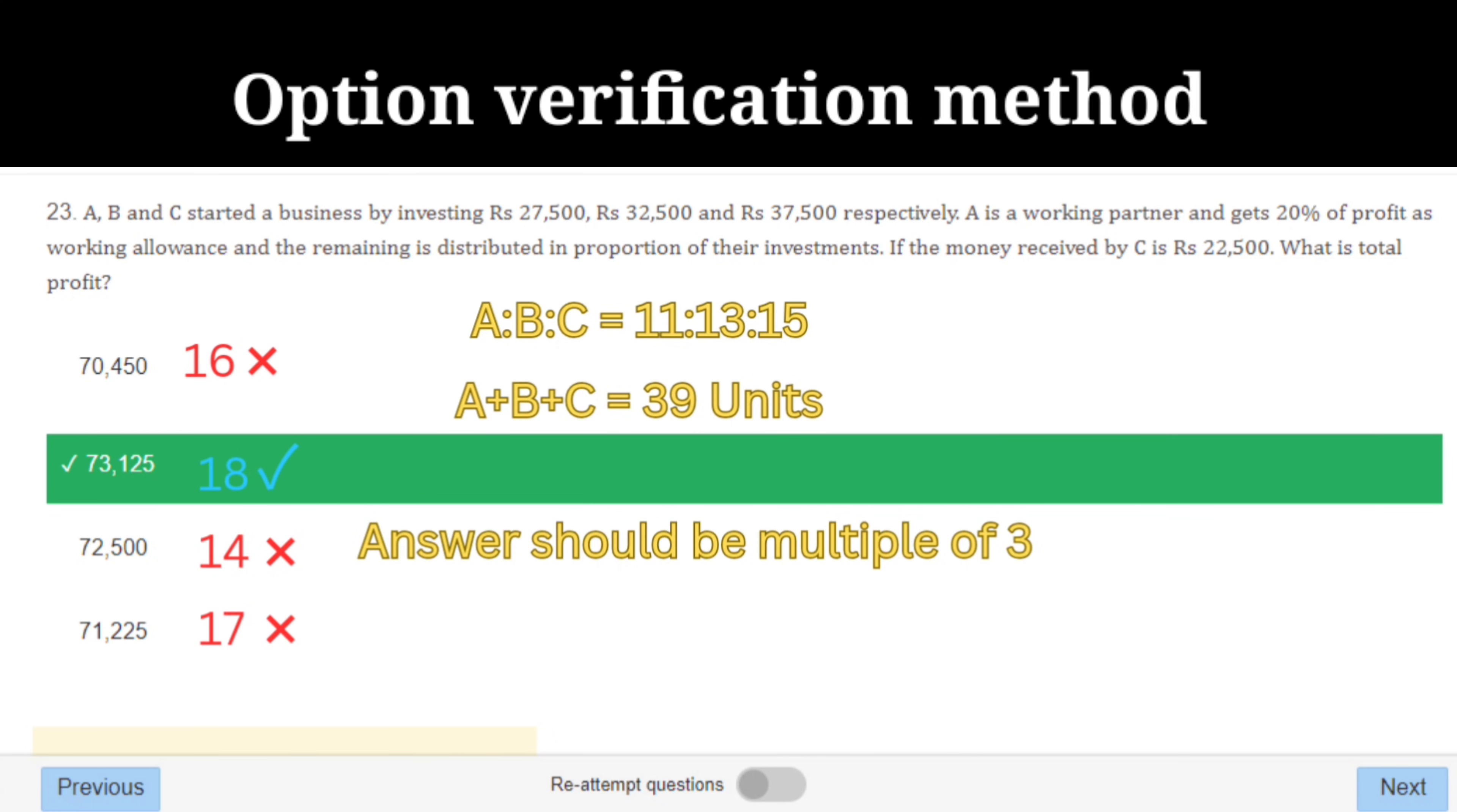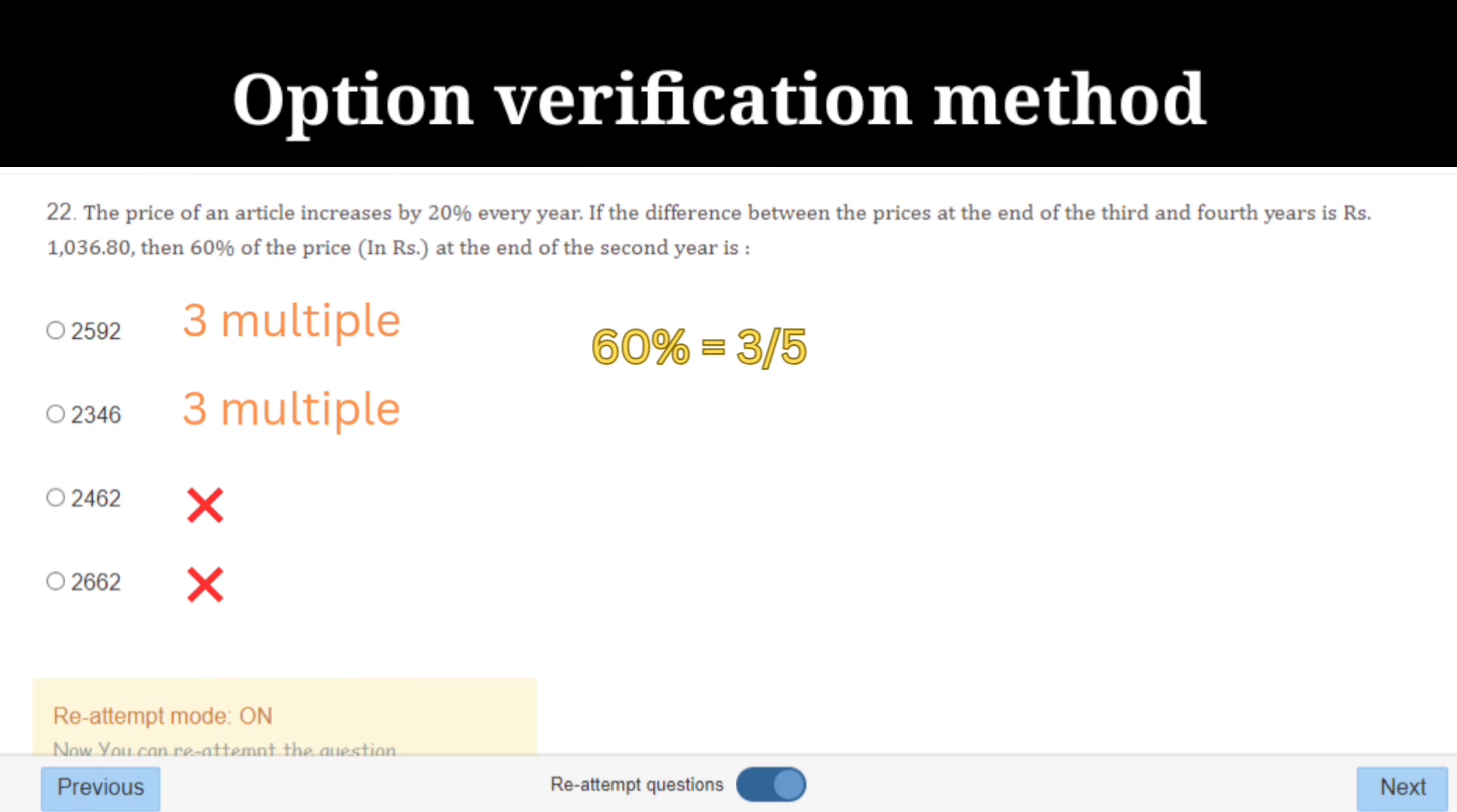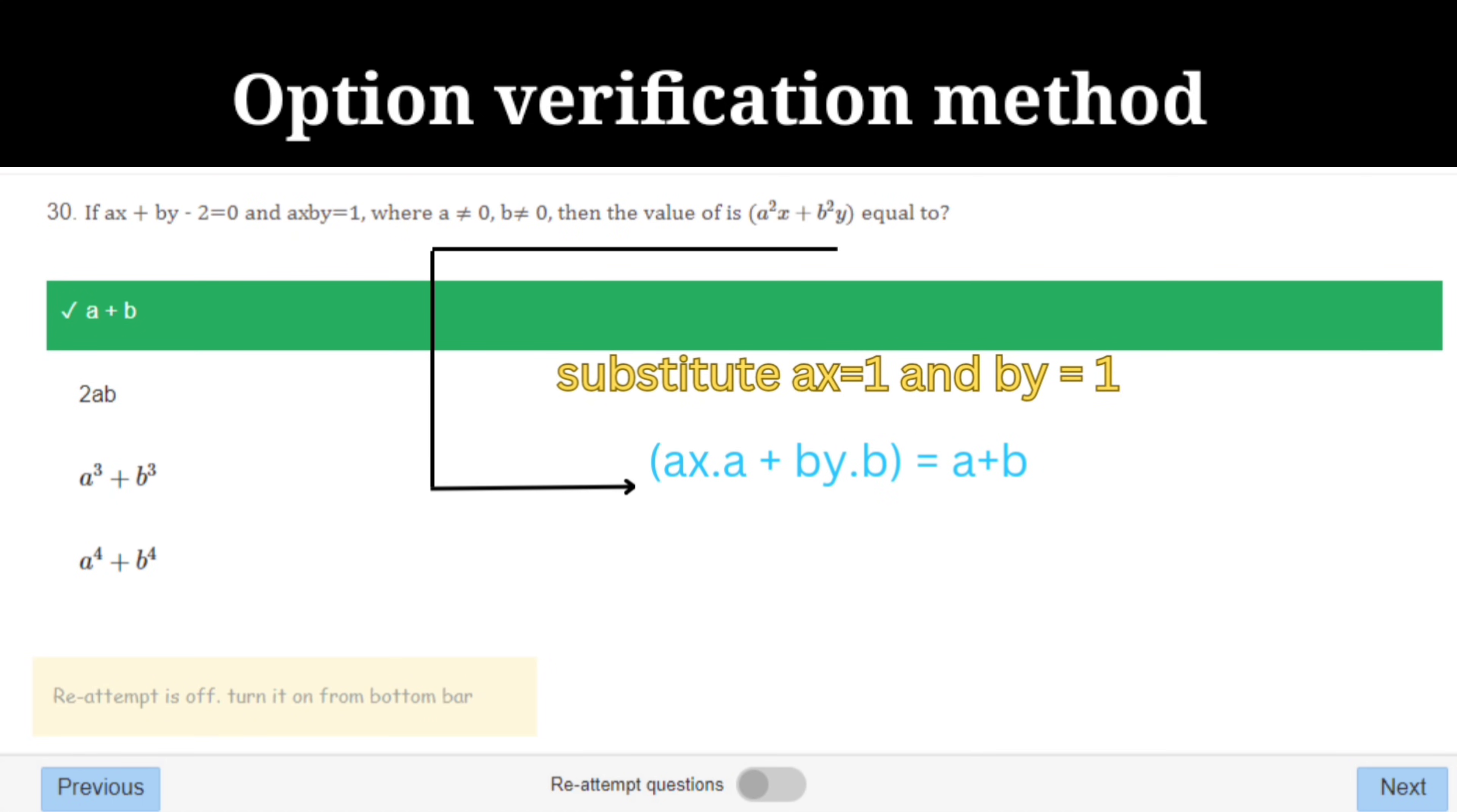Sometimes option verification might not be possible. For instance, look at this sum: 60 percent of the price at the end of the second year. We know that 60 percent means three by five, so answer should be a multiple of three. But here, two options satisfy the condition. If you don't have much time, then you can go for 50-50 probability, or if you have time, just solve it in the normal way. Moving on to the next question.